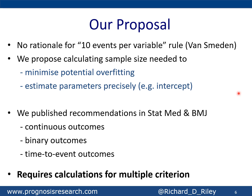So how can we get our sample size right? Our proposal is that we need to move away from the rule of thumb — also known as 10 events per variable — and rather calculate for your particular setting and model of interest the sample size needed to minimise potential overfitting and to estimate parameters in that model precisely, and at the very least to estimate the intercept of that model precisely, i.e. the overall risk. We published three or four papers in Statistics in Medicine and the British Medical Journal summarising proposals for continuous, binary, and time-to-event outcomes, and the key thing is that the calculation requires the consideration of multiple criteria.